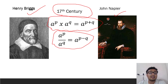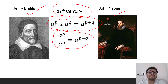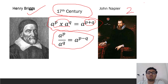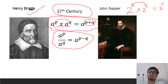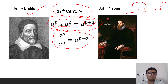When they analyzed the rules of exponents and powers, they realized that multiplying powers of the same base just requires adding the exponents. For example, 2 raised to 2 times 2 raised to 3 equals 2 raised to 5. If they could somehow convert general multiplication into addition, it would be much easier.